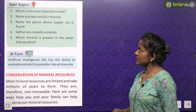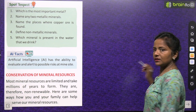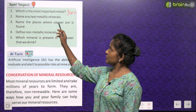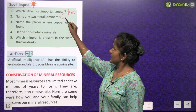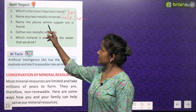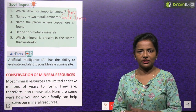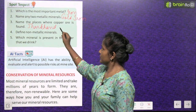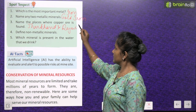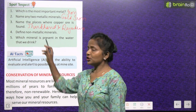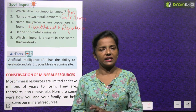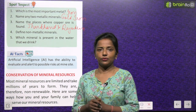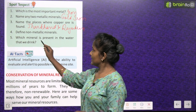Spot inspect — some questions to answer. Which is the most important metal? Iron is the most important metal. Name any two metallic minerals — gold and iron. Name the places where copper ore is found — it is found in Jharkhand and Rajasthan. Define non-metallic minerals — they are those minerals which do not contain metals. Which mineral is present in the water we drink? It is chlorine.